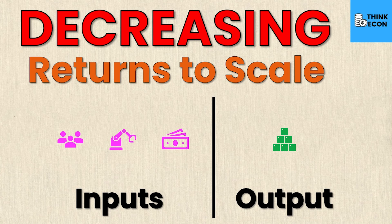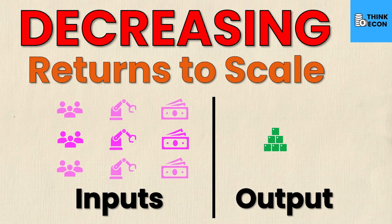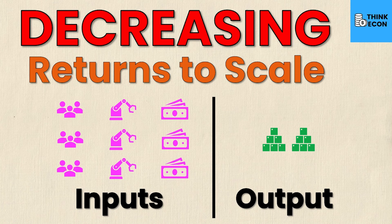Let's look at this on the screen. If I triple my inputs for decreasing returns to scale, now I have three times as much inputs, but my output will only be twice as great. This means that even though I have three times the inputs, I only have two times the outputs — which is decreasing returns to scale.